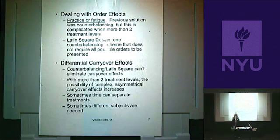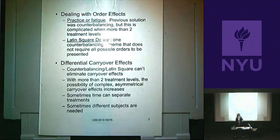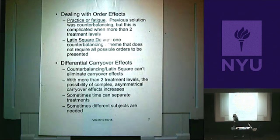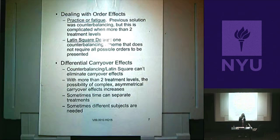An effective way to deal with order effects is something called a Latin square design. I'll talk about it at the end of this chapter — it's the way we figure out how to get rid of simple order effects, not carryover effects, in repeated measures design. You need 24 different orders; it's just not practical to fully counterbalance, so we use a Latin square design.